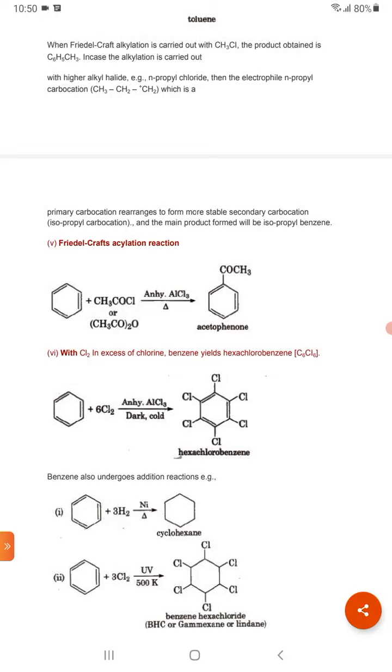Now benzene is reacted with 6 molecules of chlorine. Then it will give hexachlorobenzene. All hydrogen is replaced by chlorine. The reaction is benzene plus 6Cl2 then product will be C6Cl6.